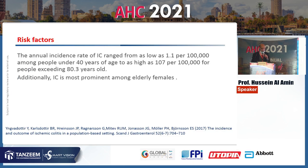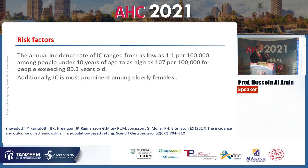The annual incidence of colonic ischemia increases significantly with age, rising from 100,000 to 107 per 100,000 between the ages of 40 and 80.